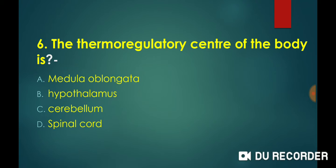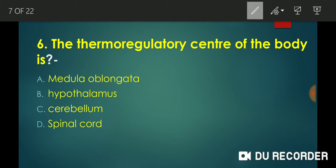The thermoregulatory center of the body — this question is based on the brain. Our body has different parts responsible for muscle coordination, thermoregulation, pain, and vision, all coordinated within the brain. The thermoregulatory center of the body is under the control of the hypothalamus. The answer to this question is option B — hypothalamus.